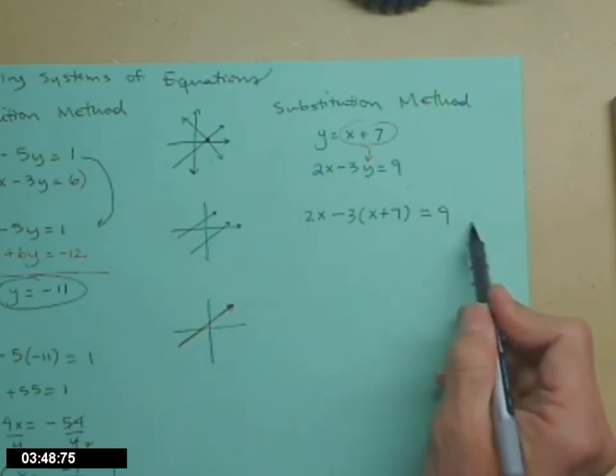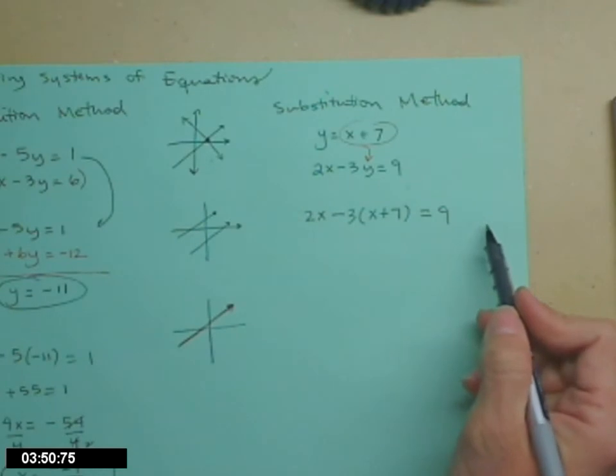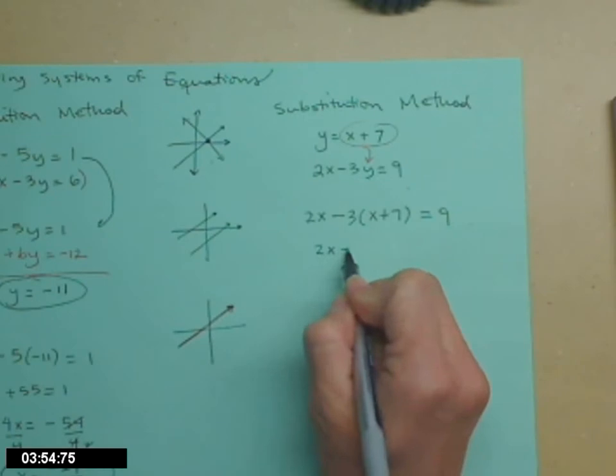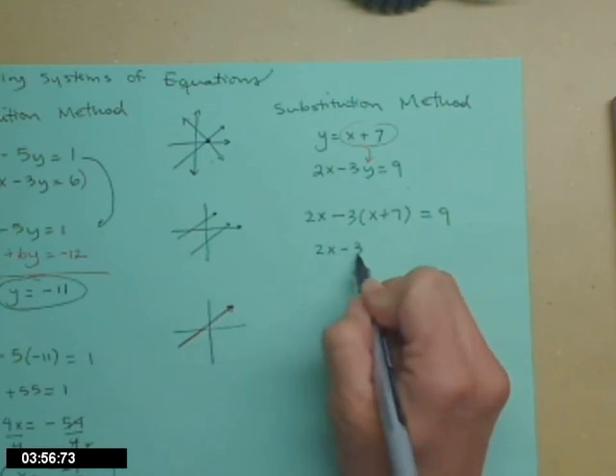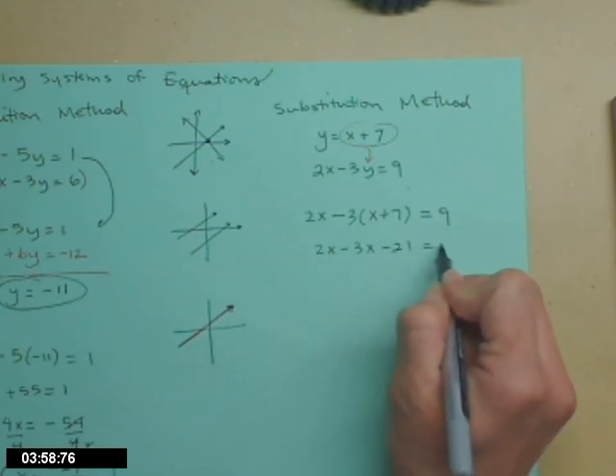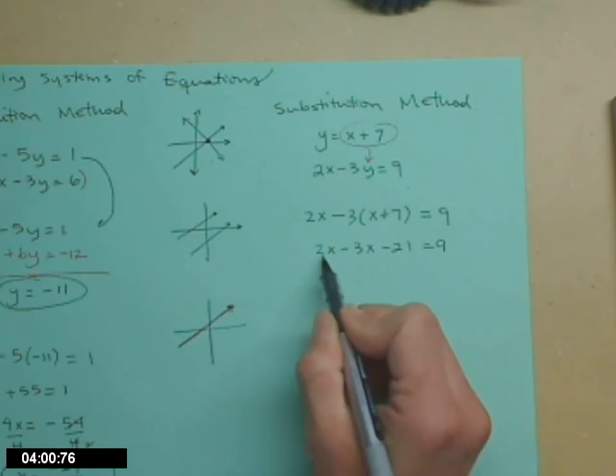Now what I get is an equation that only has one variable in it, and those are exactly the kind that we like to solve. 2x, distribute that negative 3, minus 3x minus 21 equals 9. 2x minus x is negative x,